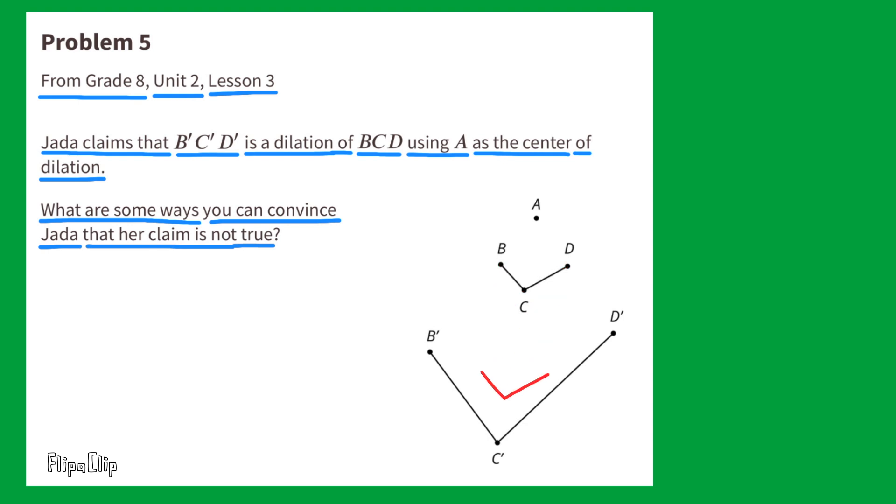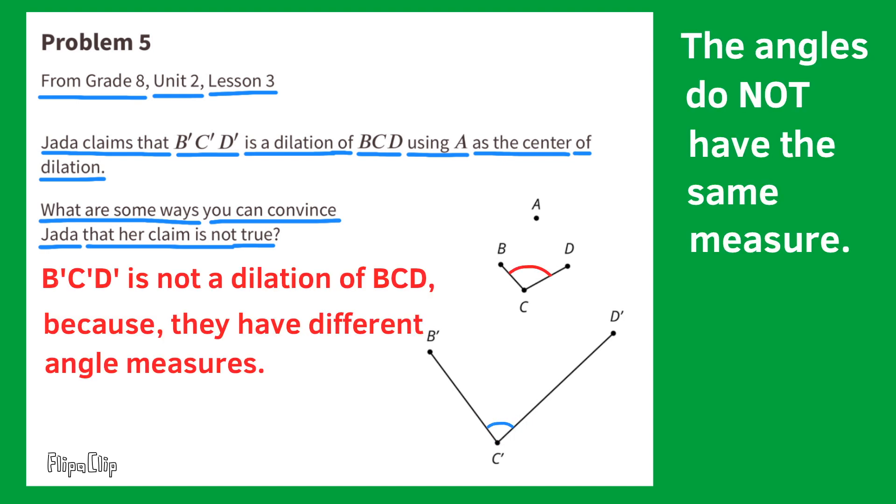Let's compare the two angles. Angle BCD looks to be wider than angle B prime, C prime, D prime. The angles do not have the same measure. B prime, C prime, D prime is not a dilation of BCD because they have different angle measures.